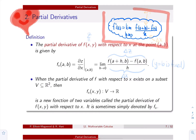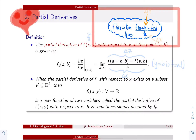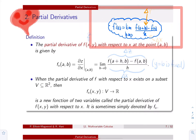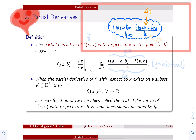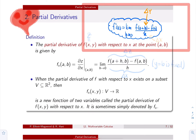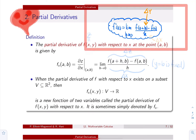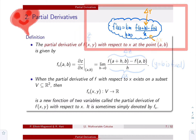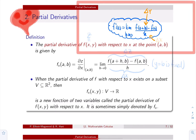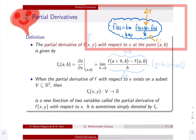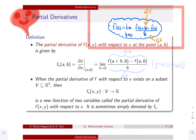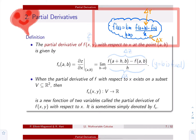The numerator of this expression is really how the output is changing — we call this change delta y — over a small change in the input x, which is delta x. But that's for a function of one variable.